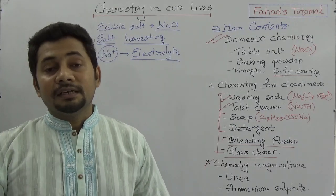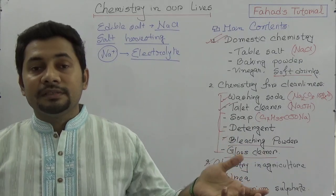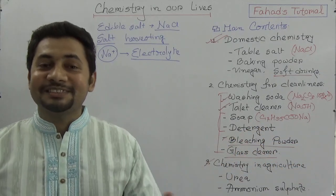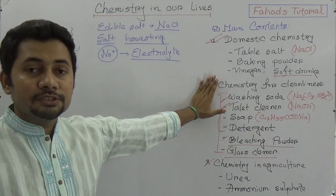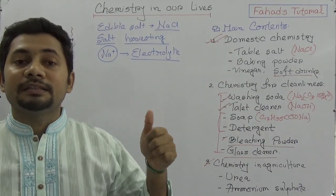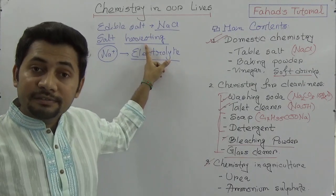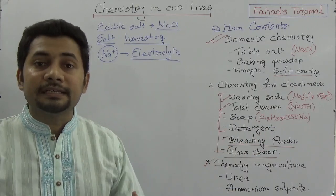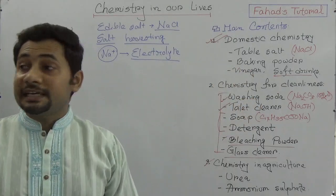Whenever you study the part of table salt, remember: number one, the process is known as salt harvesting; sodium chloride is extracted from seawater; and the function of sodium chloride. Now we will think about the second topic — baking powder. Before discussing baking powder, we need to know what baking soda is. Baking soda is sodium bicarbonate, also called sodium hydrogen carbonate (NaHCO₃).